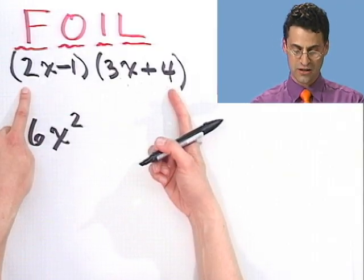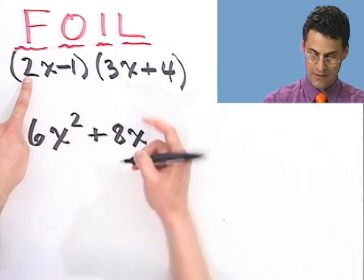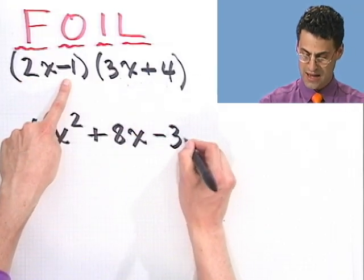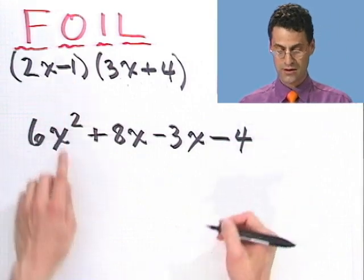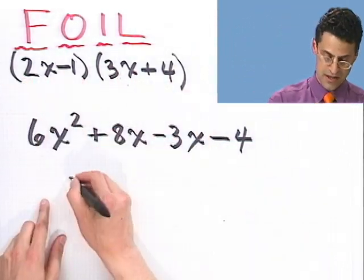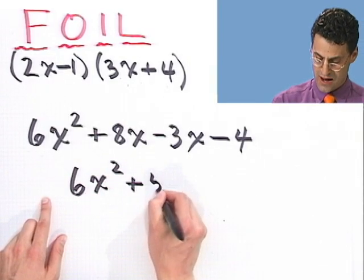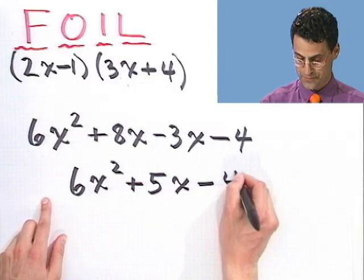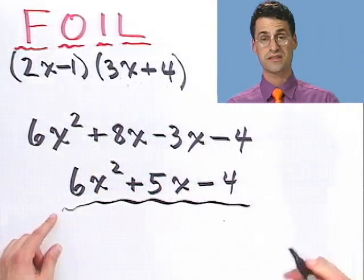Now, my outside terms produce a net gain of plus 4 times 2 is 8x. My inside terms are -3x. And the last times the last is a net gain of -4. I can combine these two terms together, the inside and the outside terms. And I would just see 6x² and plus 5x - 4. Because 8x - 3x is 5x. So there's the answer. Neat.